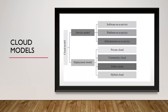In previous videos we have seen what is cloud computing. For cloud computing to store different types of data, there are some models designed in the cloud. That cloud model has two types: service model and deployment model. The service model is further divided as software as a service, platform as a service, and infrastructure as a service.